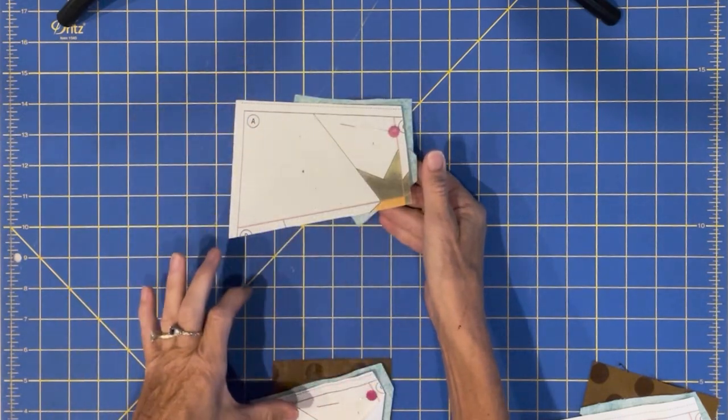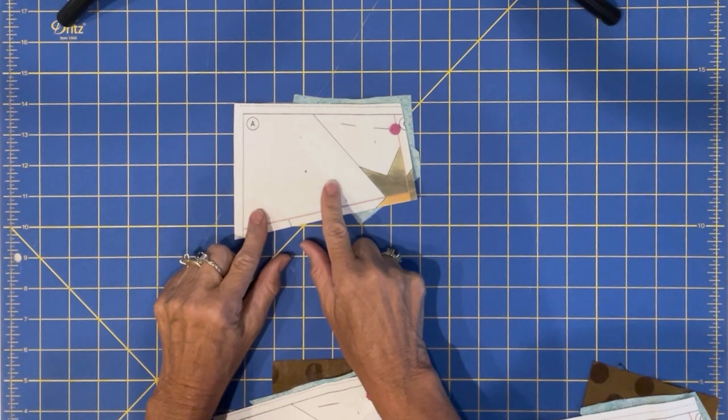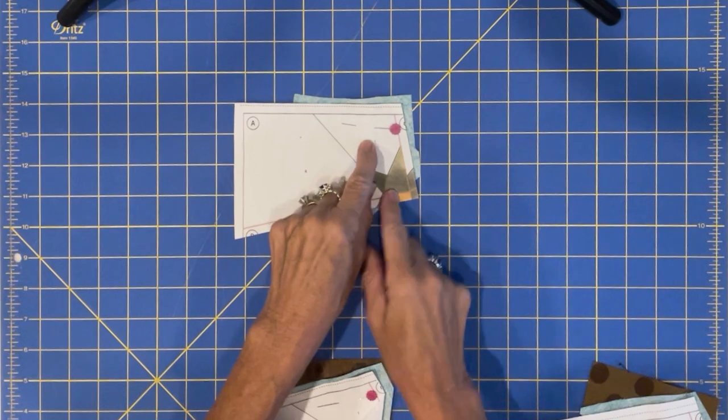You'll have an A segment, a B segment, a C and so on. And each segment has numbered pieces in it and you're going to follow those numbers. So right now I'm working on piece one.